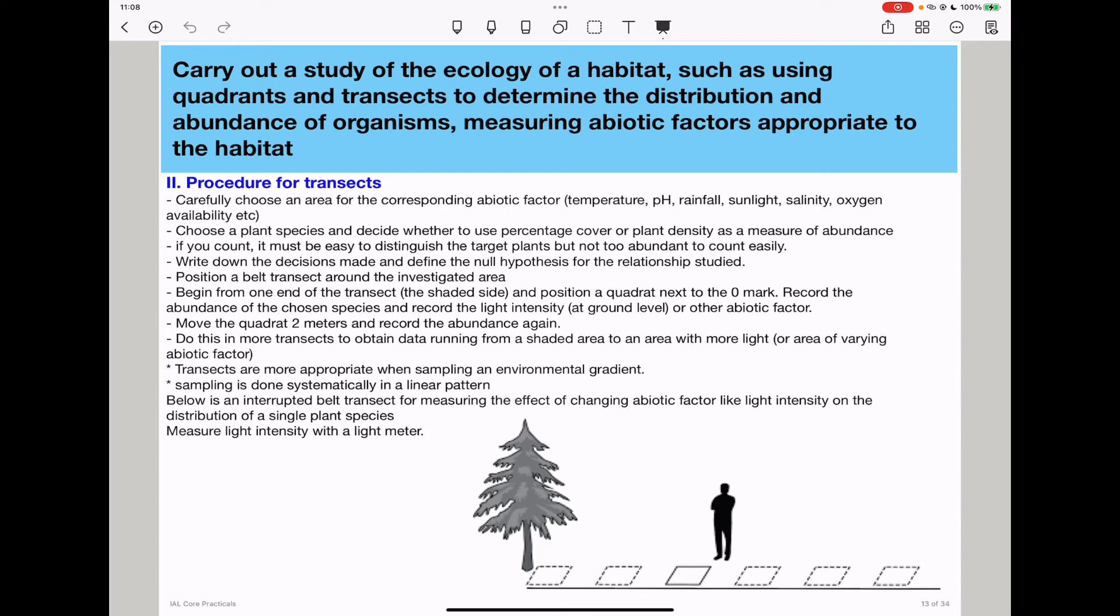You need to know that transects are more appropriate when you're sampling an area that has environmental gradient. Sampling is also done systematically in a linear pattern, meaning you begin from here, you go to the next, you go to the next, and so on. Do not skip. We are using an interrupted belt transect for measuring the effect of changing the abiotic factor, which is light intensity, on the distribution of a single plant species.